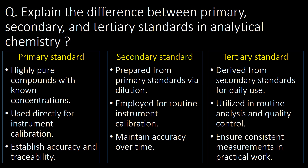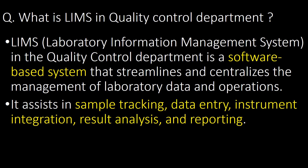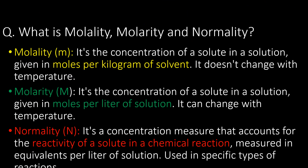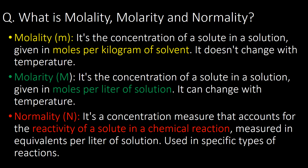What is LIMS in the quality control department? LIMS stands for Laboratory Information Management System. In the quality control department, it is a software-based system that streamlines and centralizes the management of laboratory data and operations. It assists in sample tracking, data entry, instrument integration, result analysis, and reporting.